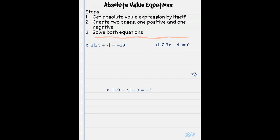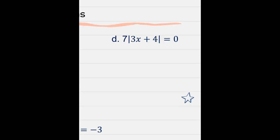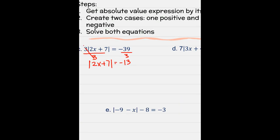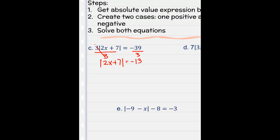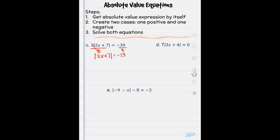Okay, we have to get the absolute value expression by itself. In C, it's not by itself because of this little 3 right here. So it's being multiplied by that absolute value. So I need to do the opposite and divide by 3. So we've got absolute value of 2x plus 7 equals negative 13 divided by 3. Now it's by itself and I go through the same steps.